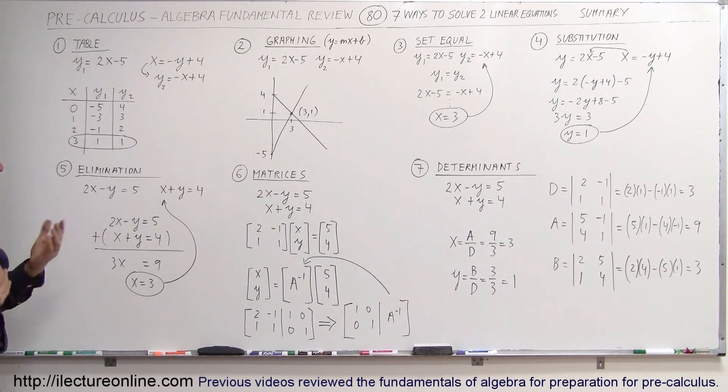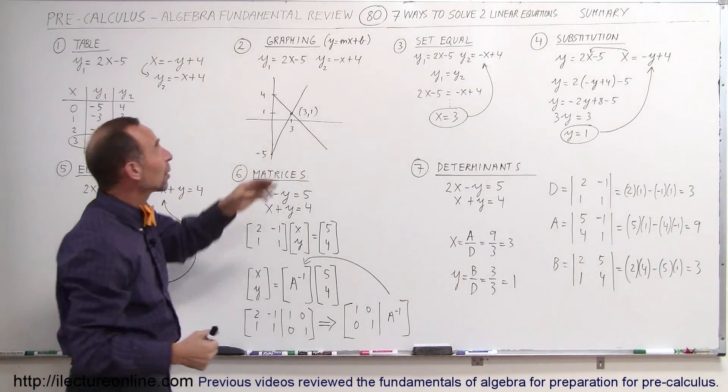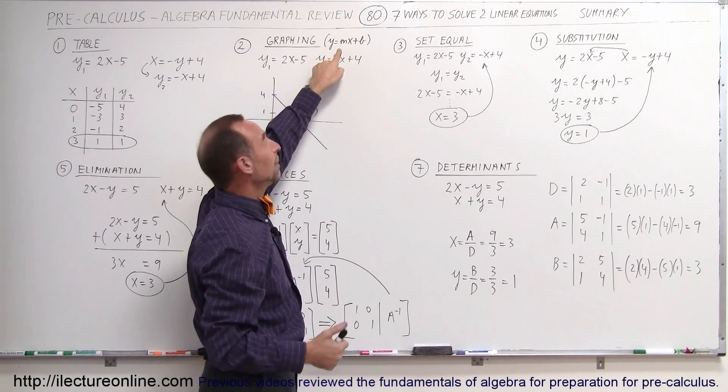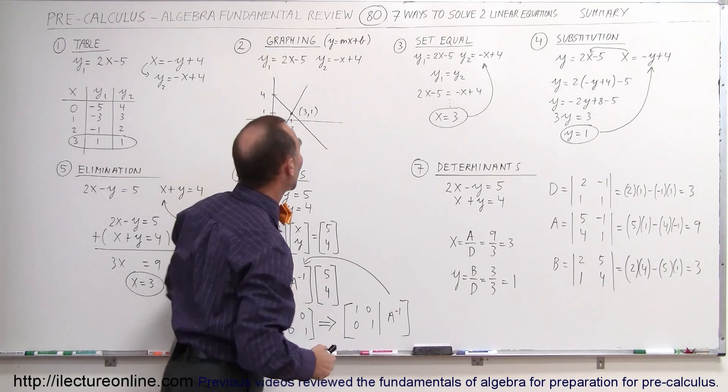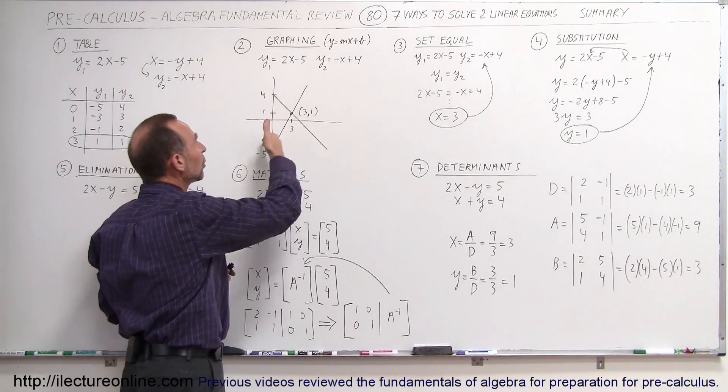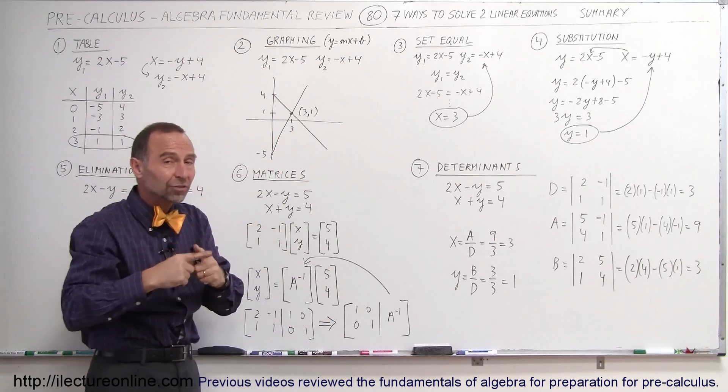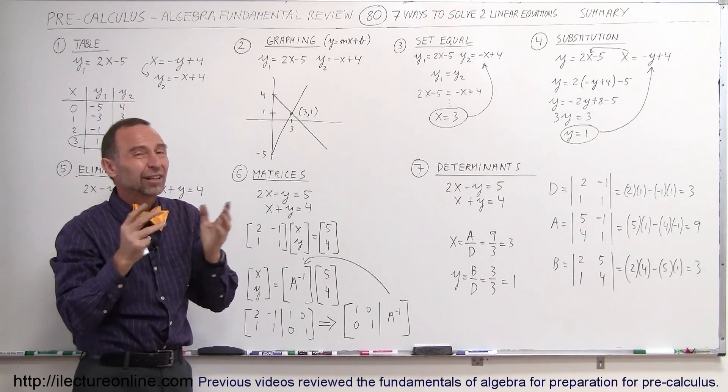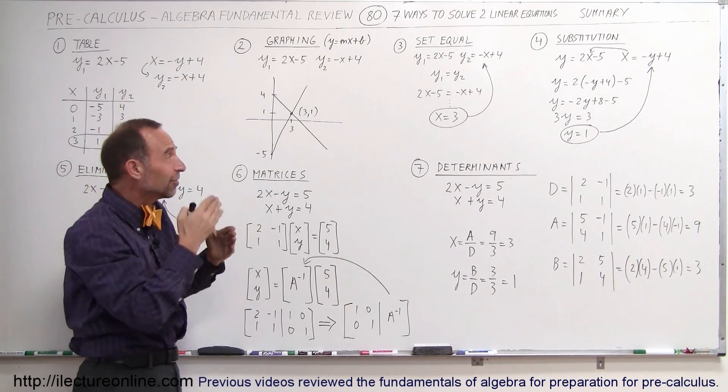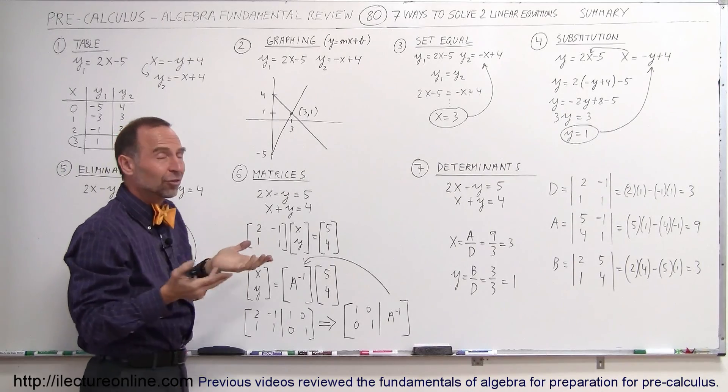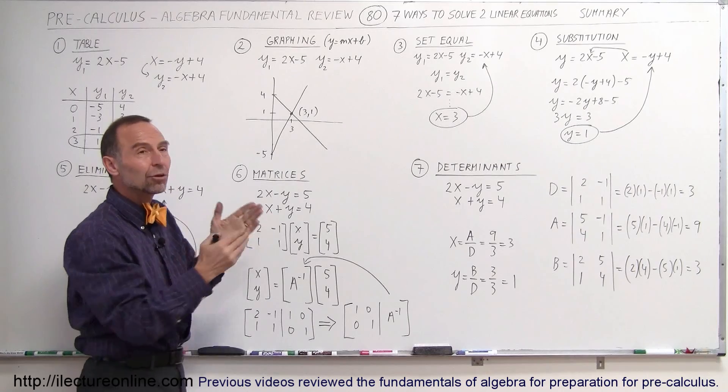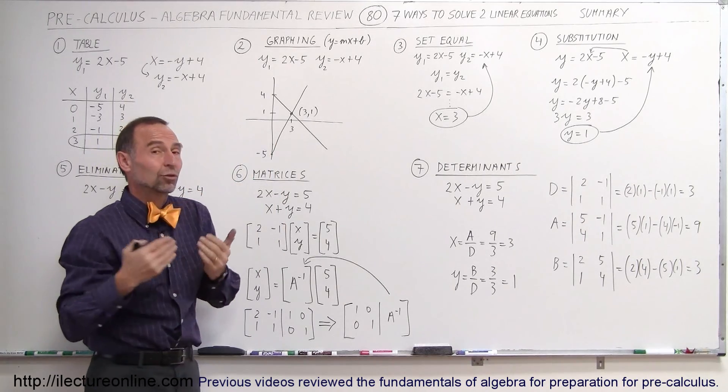The second one is simply graphing it. When you do that, you have to change your equation to the y equals mx plus b format, m being the slope, b being the y-intercept. You then graph the two equations, and simply where the two lines cross, that's where you have the solution. You don't always get the exact answer unless you do it very carefully on graph paper, and it's easy to find the exact answer, but sometimes an approximate answer is good enough. That's how you do it, and here you can see the graphical representation of what you're trying to do.